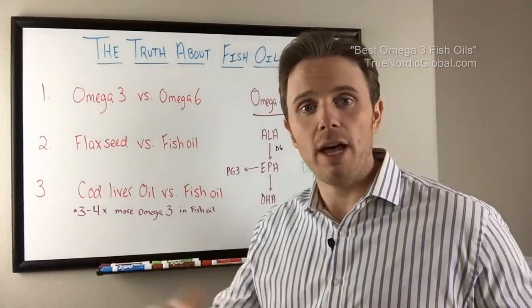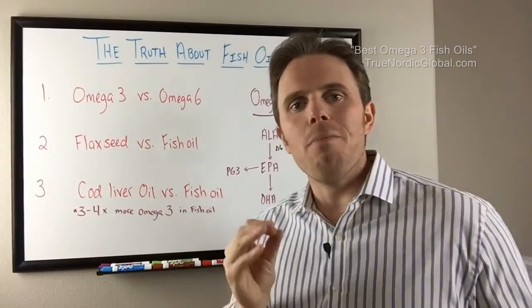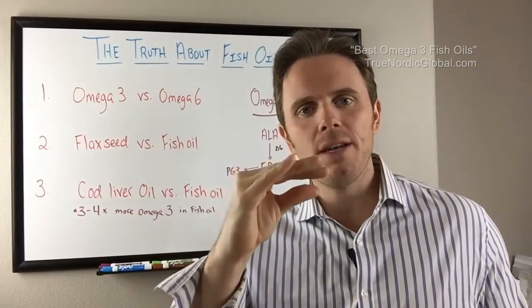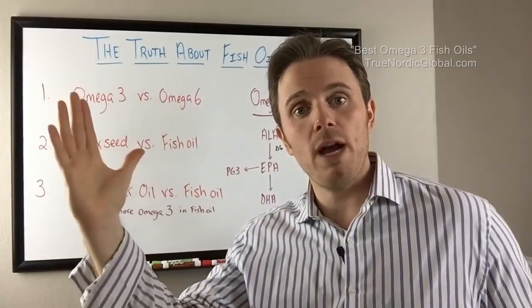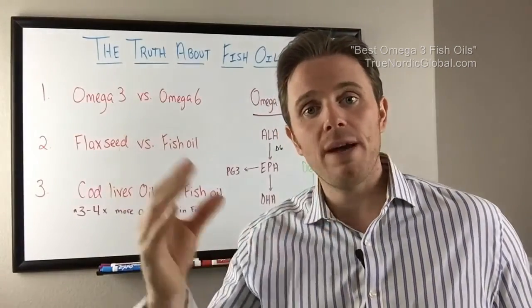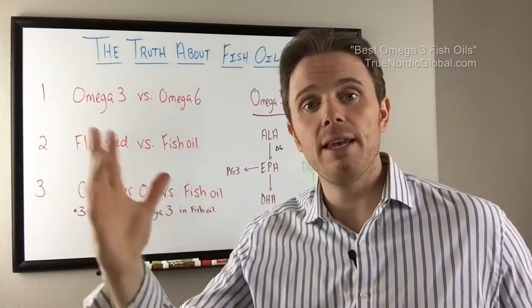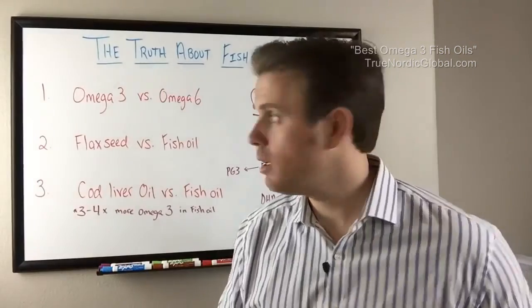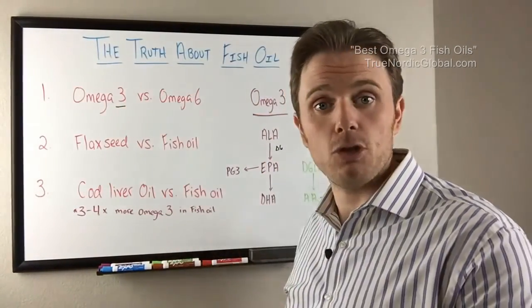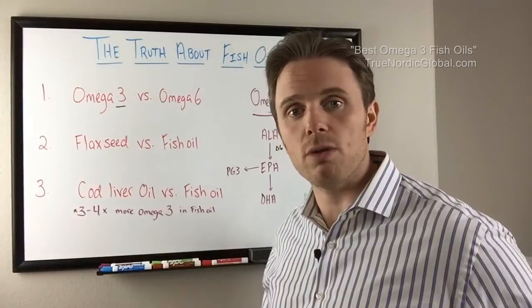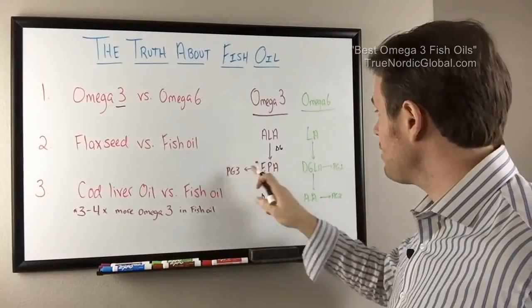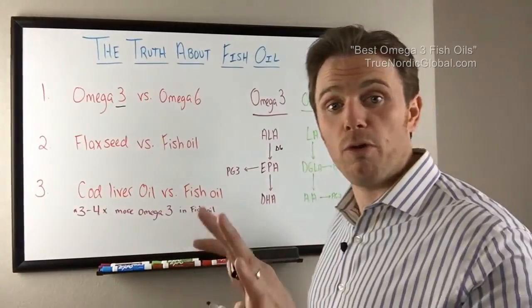What makes an omega-3 an omega-3 is where the placement of that last double bond is. If it's three carbons away from the end of the chain, that makes it an omega-3. If it's six carbons away from the end, that makes it an omega-6. Omega-3s inherently tend to be anti-inflammatory — they quell or decrease inflammation by feeding various prostaglandin pathways, which we'll go over in a second.